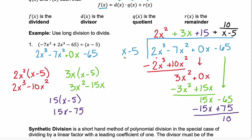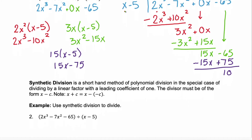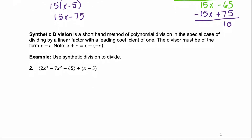So you just did long division on a polynomial — a polynomial divided by a linear binomial. Now another simplified method of long division is called synthetic division. Synthetic division is just a shorthand method for this long division, and it can only be used for the special case of dividing by a linear factor with a leading coefficient of 1, something that looks like x minus c. We have that here. Notice we're going to be dividing the same polynomial by the same binomial as we just did. Our first step is to make sure that everything is in descending order.